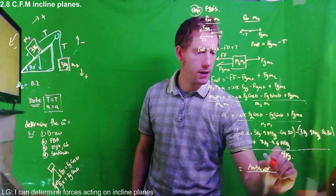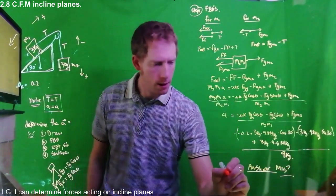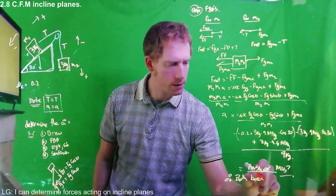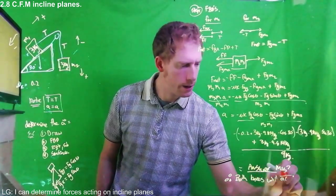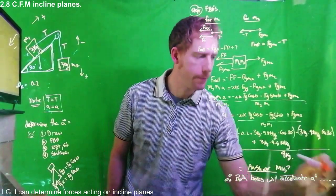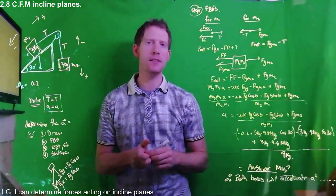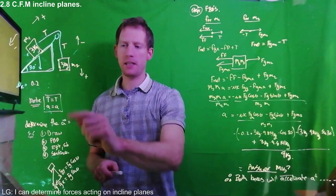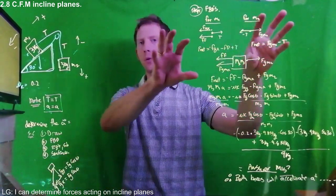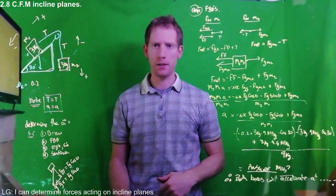The answer is in meters per second squared, and then you write your statement: 'Therefore, both boxes will accelerate at [your answer] m/s².' Make sure you include units. That's how to solve for hanging masses on an incline. The key things to remember: tensions are the same, accelerations are the same, and you can combine two FBD diagrams into one model.